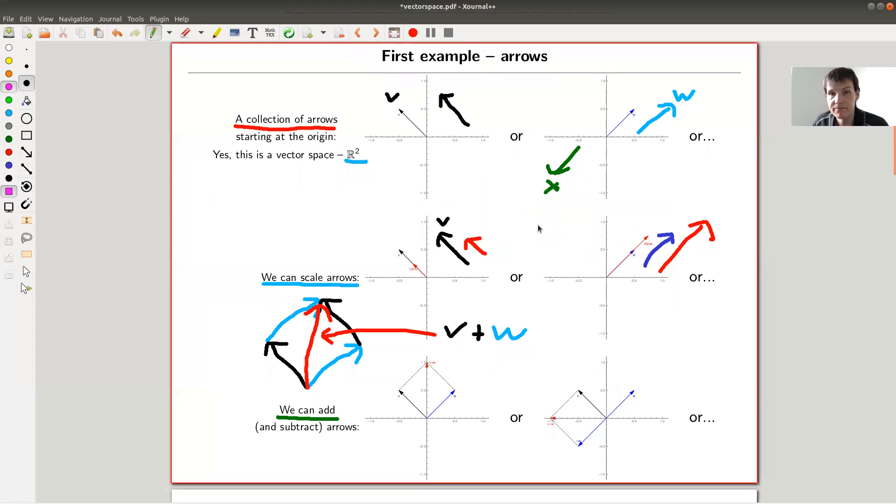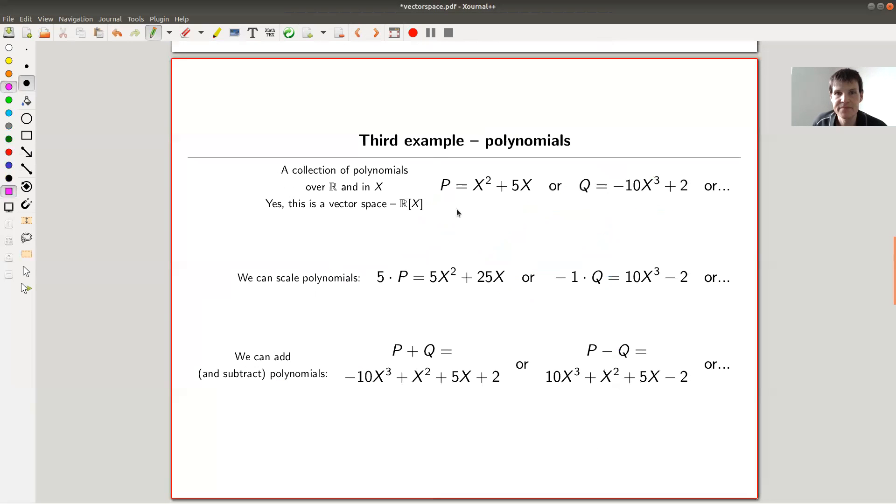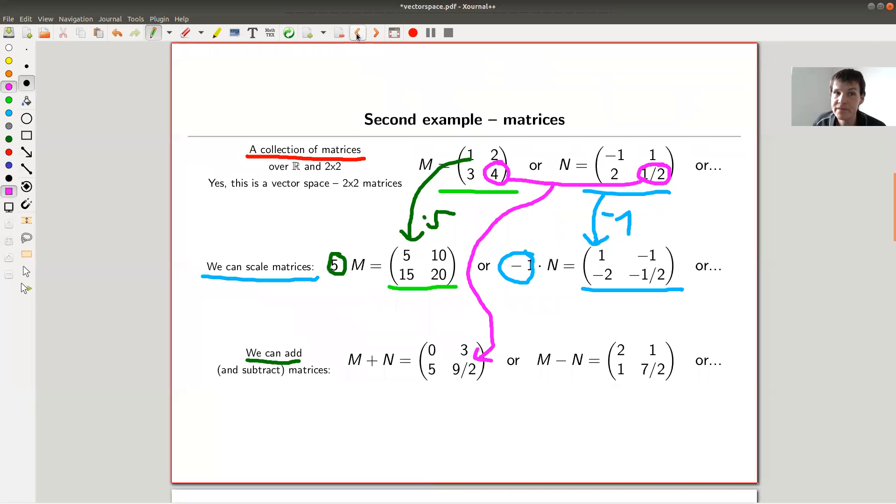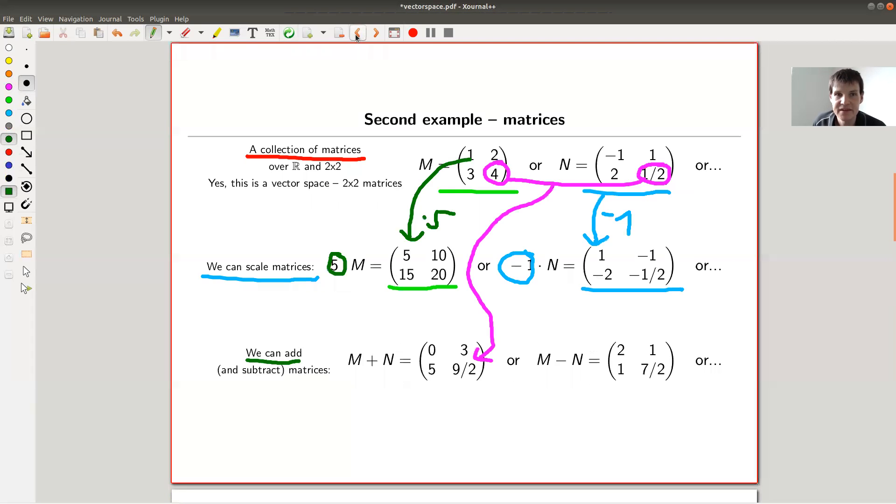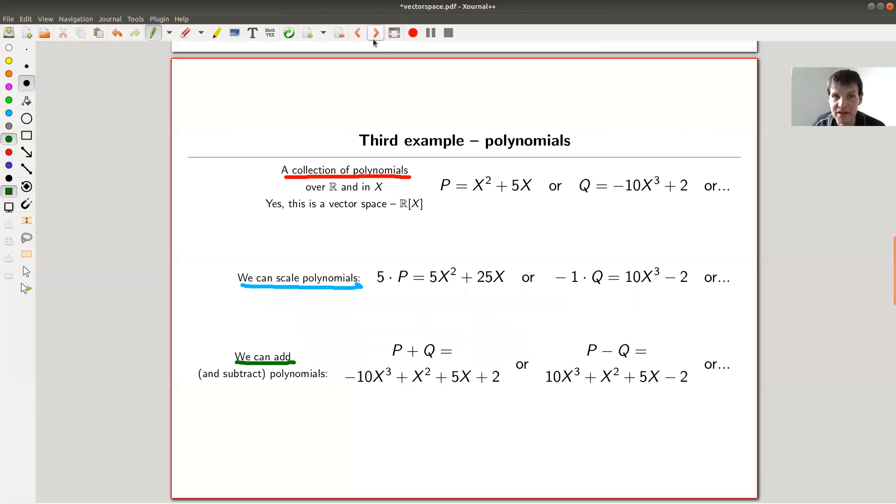Looks completely different than what you've seen before, but they are kind of the same types of operations. Third example, polynomials. And again, collection, scale, you can add. It's the same principle. You have some polynomials, you can multiply them, you can add them. I've done some examples here. Nothing very fancy. You probably know how to add and multiply polynomials. The point is collection, scale, add.